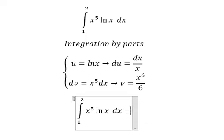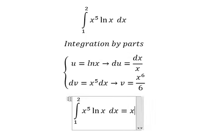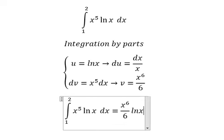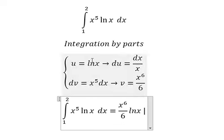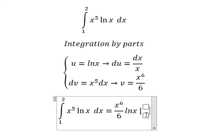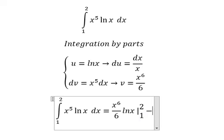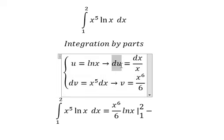So this one we have u multiplied by v, and we put the bounds from 1 to 2. Minus we have u multiplied by v, so this one divided by x.